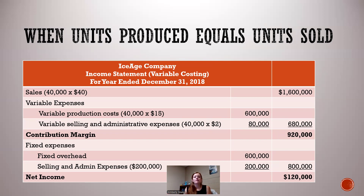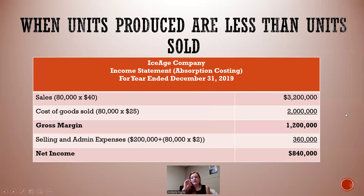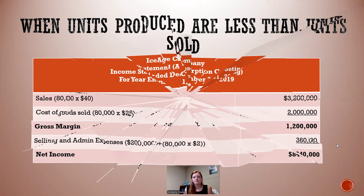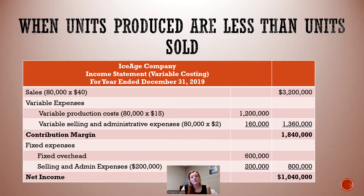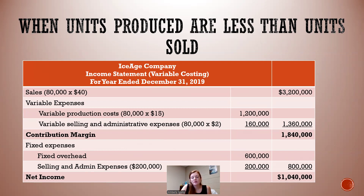That's why GAAP requires absorption costing — under variable costing, you've expensed all $600,000 of fixed overhead even though 20,000 units still sit in inventory with some of those costs attached. In 2019, we sold all 80,000 units: cost of goods sold is 80,000 × $25 = $2 million under absorption, and after selling and administrative expenses, net income is $840,000. Under variable costing, net income is $1,040,000 — $200,000 more — because we now recognize the fixed overhead that was delayed from 2018.